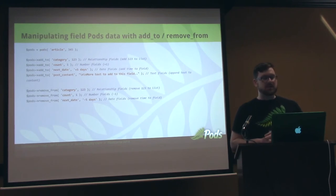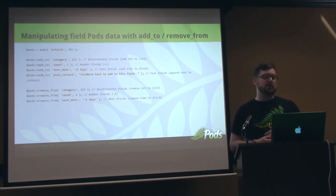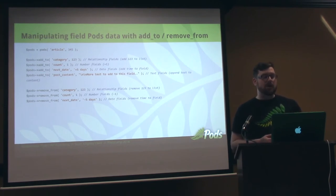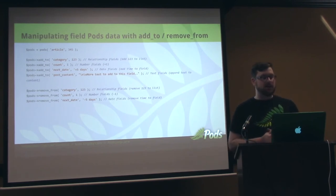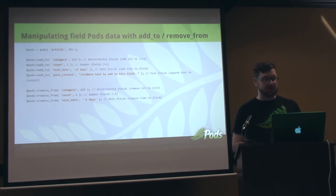You can do the same thing but in reverse with Remove From. You can remove categories — say remove one, two, three from the categories, but only if they exist and keep the existing ones. You can also subtract a number from a number field, and the same thing applies for the date field, though that case might be a little different.